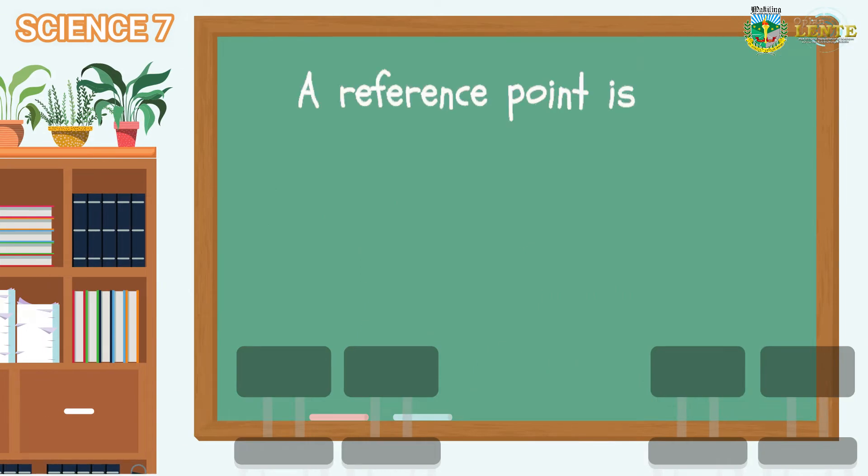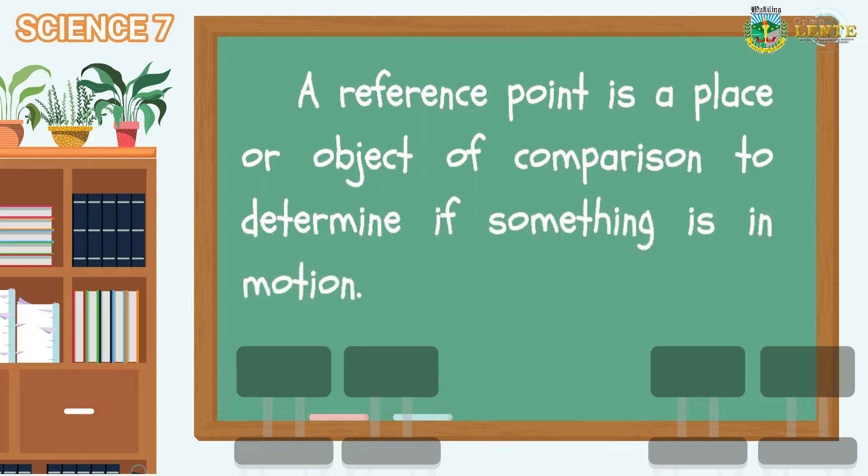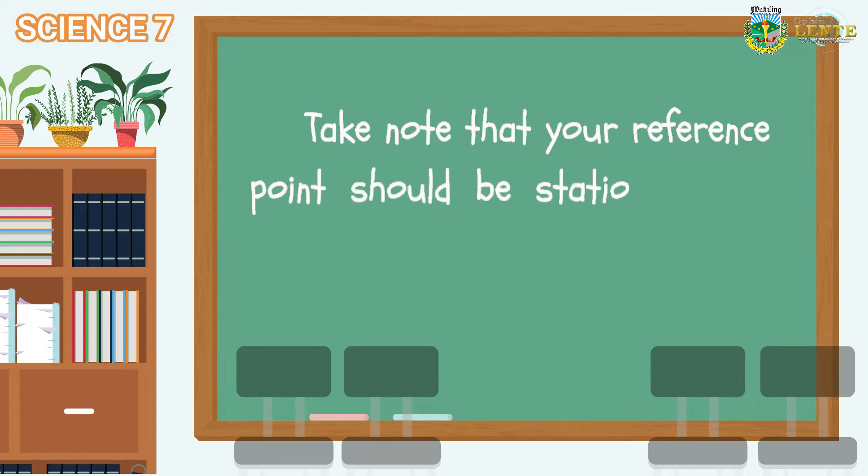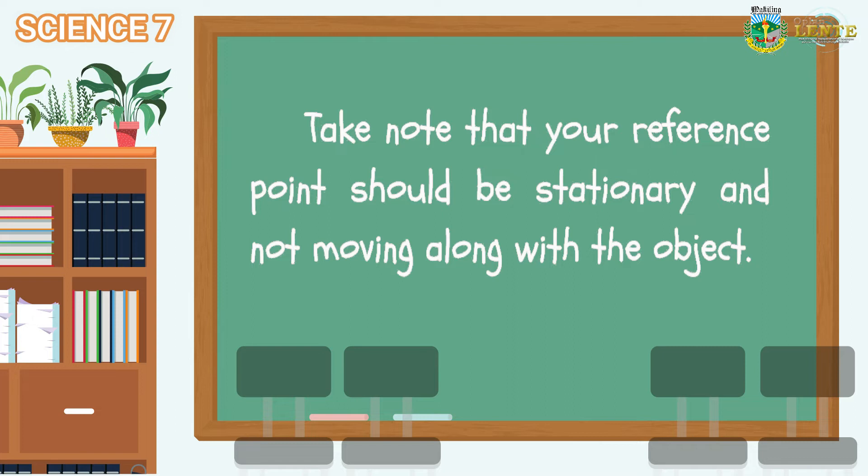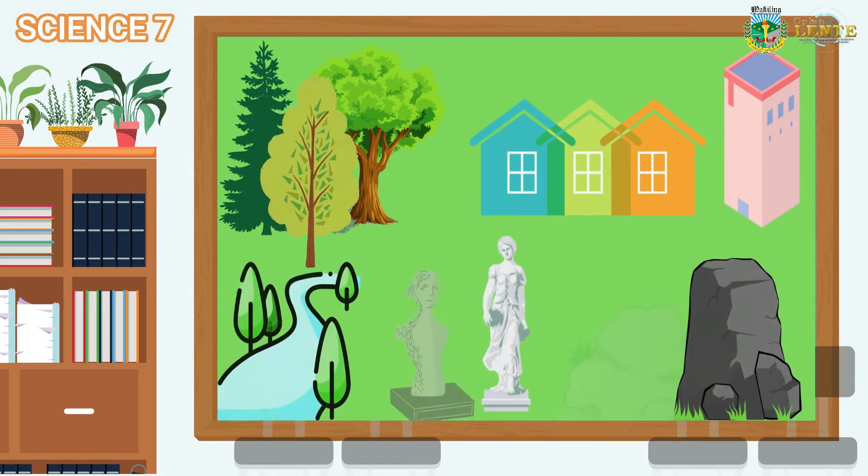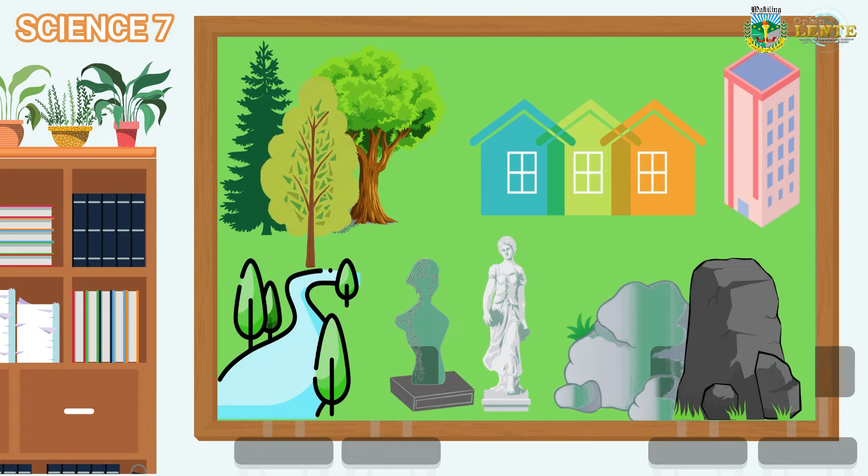A reference point is a place or object of comparison to determine if something is in motion. Take note that your reference point should be stationary and not moving along with the object. Examples: trees, houses, or any establishments, big rocks, statues, rivers, etc.